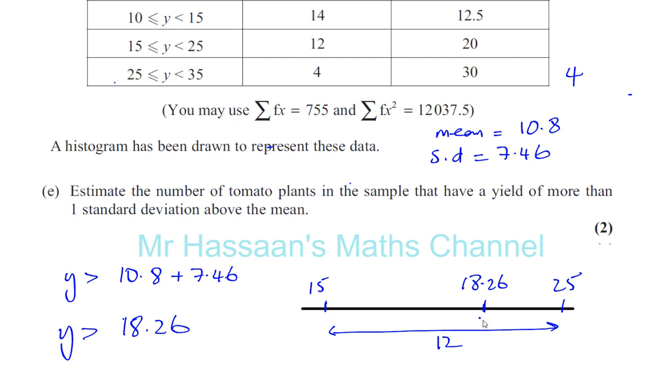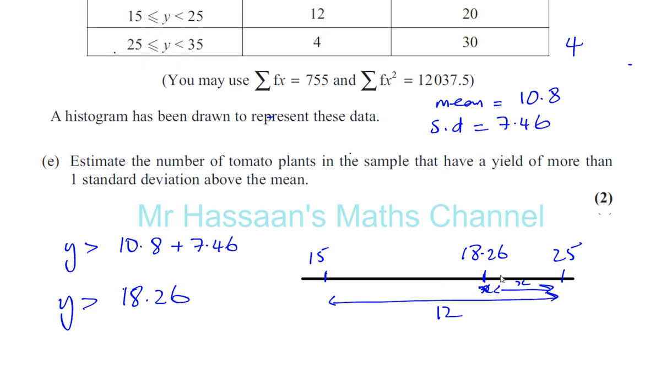We're trying to find the number in this section here. We can do a kind of reverse of linear interpolation that we did before. We're trying to find what proportion this is of the whole thing. You've got 25 minus 18.26,